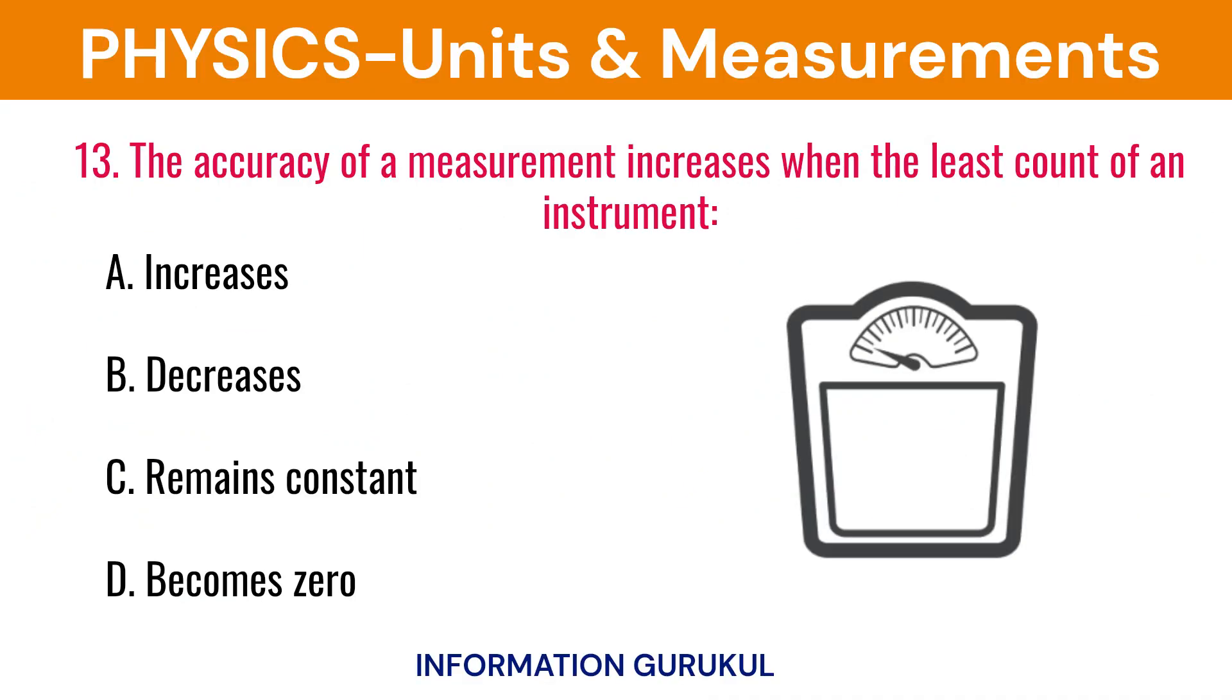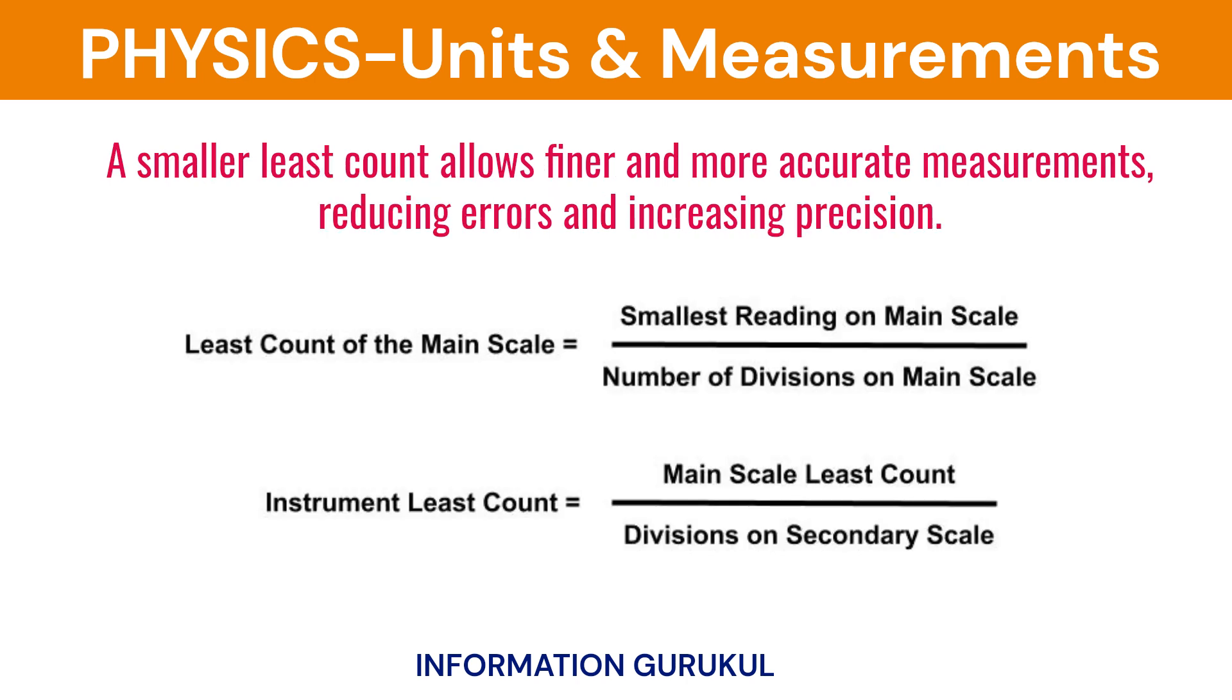The accuracy of a measurement increases when the least count of an instrument decreases. A smaller least count allows finer and more accurate measurements, reducing errors and increasing precision.